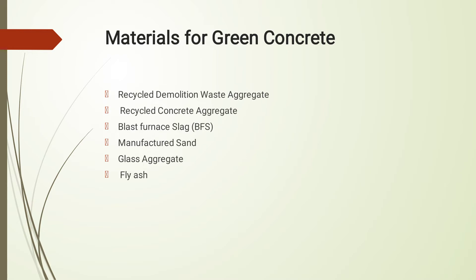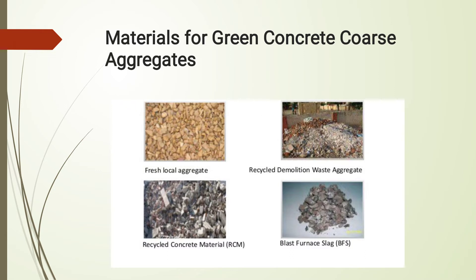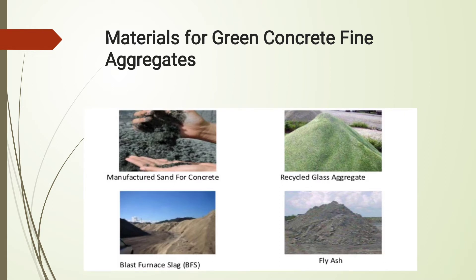Materials for green concrete include: recycled demolition waste aggregate, recycled concrete aggregate, blast furnace slag, manufactured sand, and glass aggregate and fly ash — some of which can be used as coarse or fine aggregates. For coarse aggregates: fresh local aggregate, recycled demolition waste aggregate, recycled concrete material, and blast furnace slag. For fine aggregates: manufactured sand, recycled glass aggregate, blast furnace slag, and fly ash. Fly ash is a by-product produced during the operation of power plants, where finely divided materials from exhaust gases are collected in precipitators.